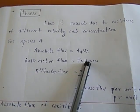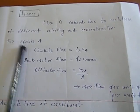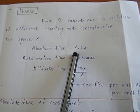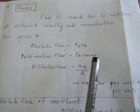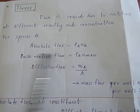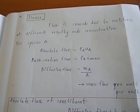For species A, considering only species A, absolute flux is equal to U_A into rho_A. Bulk motion is equal to rho_A into U_mass. We can find U_mass from the previous equation.